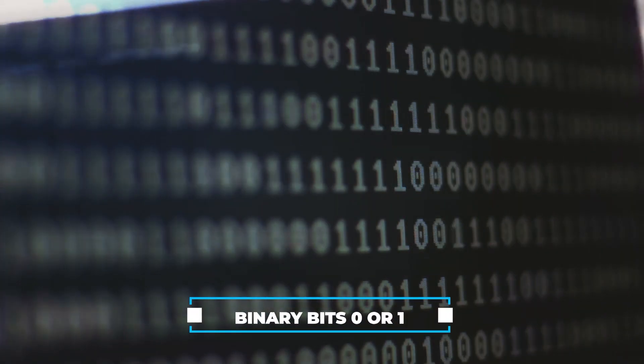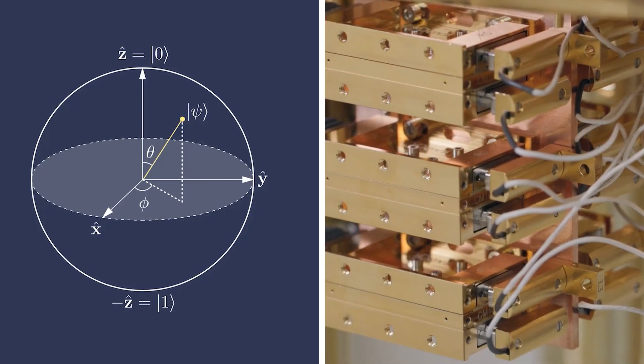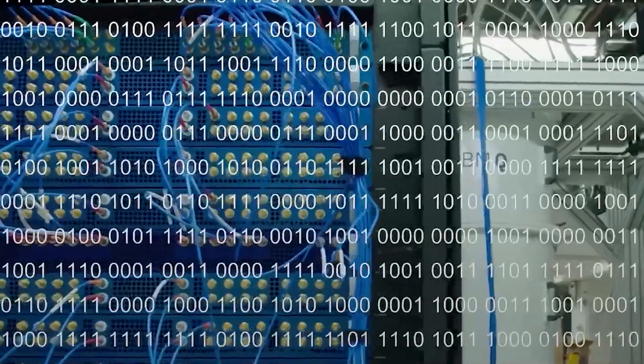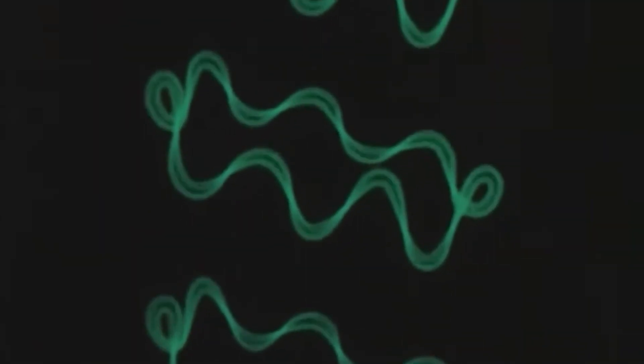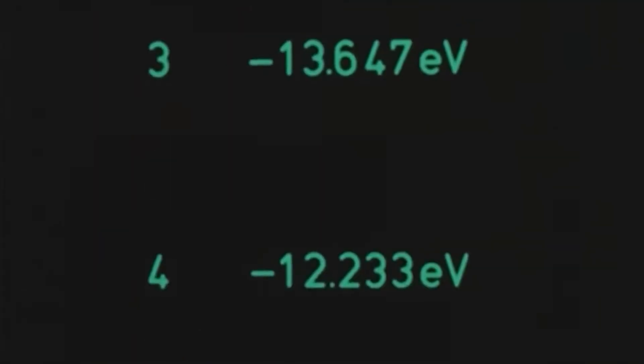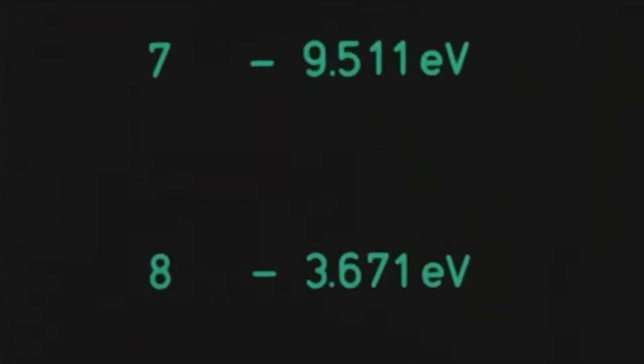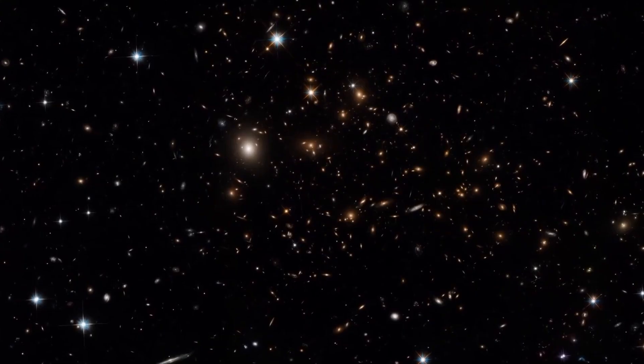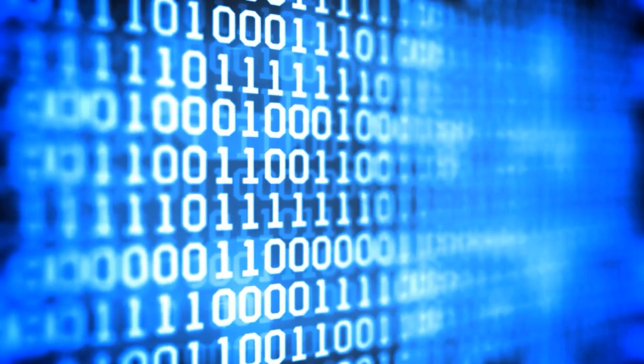Unlike classical computers that rely on binary bits, either zero or one, quantum computers employ quantum bits or qubits. These qubits possess the unique ability to exist in multiple states simultaneously, unlike classical bits restricted to a single state. Visualizing qubits as arrows in a three-dimensional space, an upward arrow represents a zero state, and a downward arrow represents a one state, analogous to classical bits.